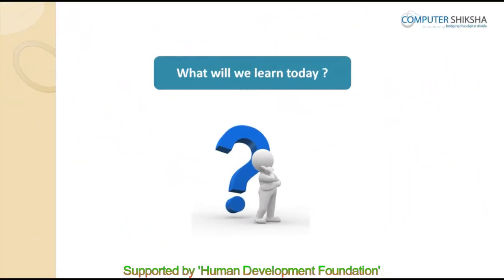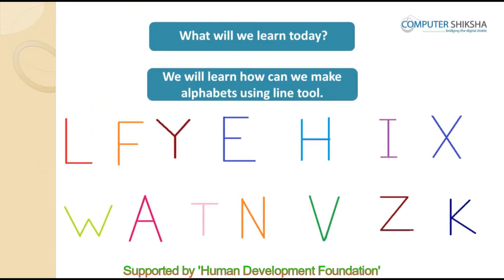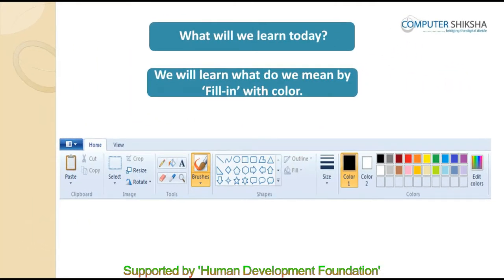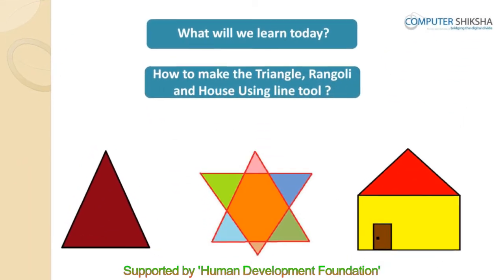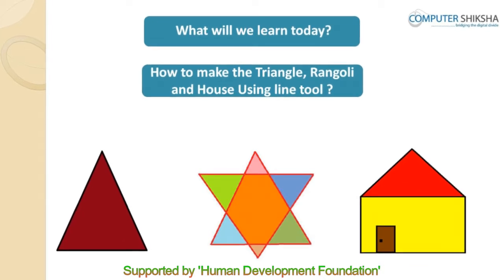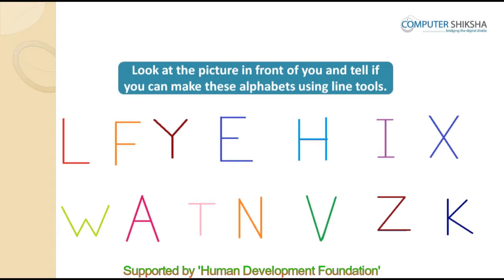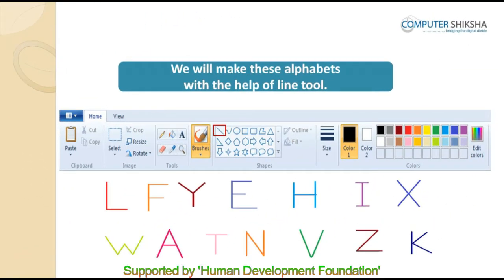In this class, we will learn how we can make alphabets using the line tool. Next, we will learn what we mean by fill in with color, and then we will use fill with color to make drawings like triangle, house, rangoli, etc. Look at the picture in front of you — all alphabets are there and we will make these alphabets with the help of the line tool.